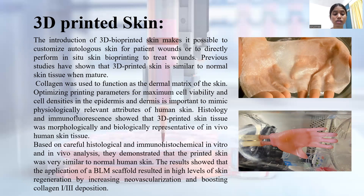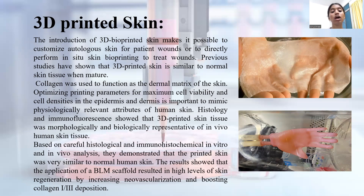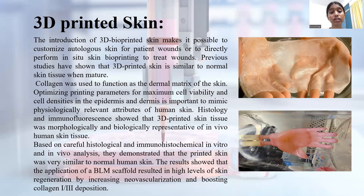Histology and immunofluorescence showed that 3D printed skin tissue was morphologically and biologically representative of in vivo human skin tissue. Based on careful histological and immunohistochemical in vitro and in vivo analysis, they demonstrated that 3D printed skin was very similar to normal human skin. The results show that application of a BLM scaffold resulted in high levels of skin regeneration by increasing neurovascularization and boosting collagen 1 and 3D deposition.